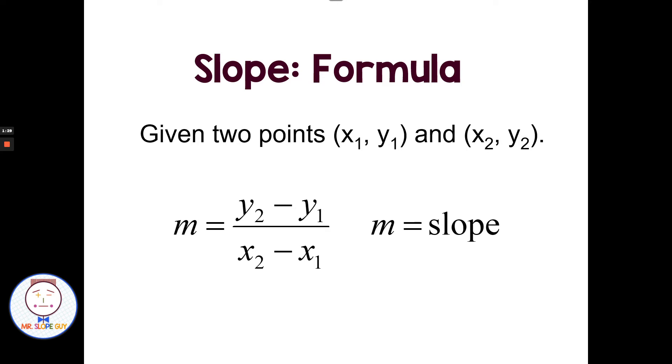We have the slope formula. The slope formula is m equals y sub 2 minus y sub 1, that's the change in the rise, over x sub 2 minus x sub 1, which is a change in the run. So we're still talking about slope being rise over run. We're just looking at it more numerically as to being able to calculate slope.